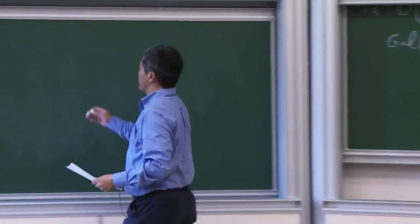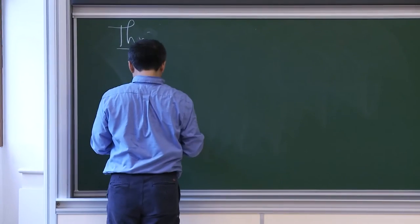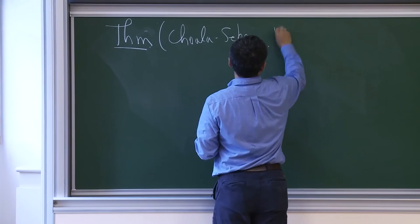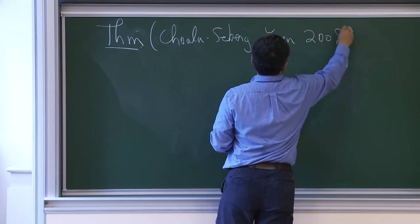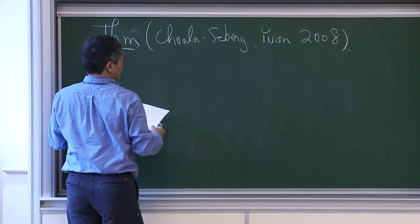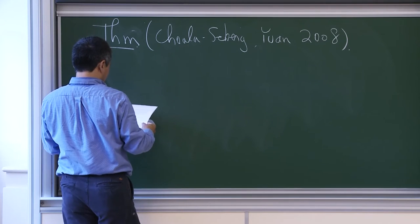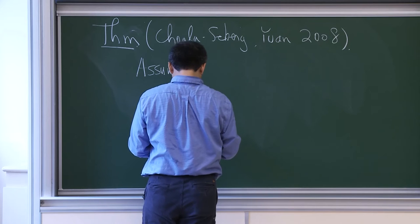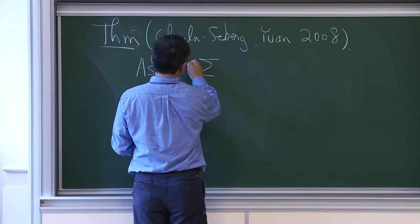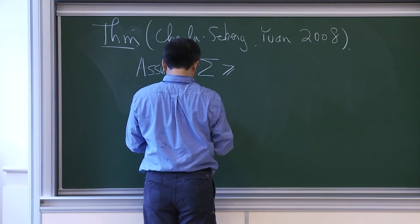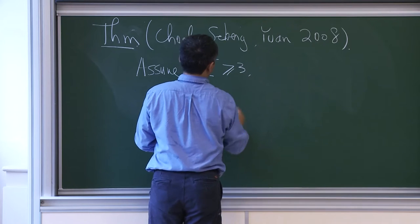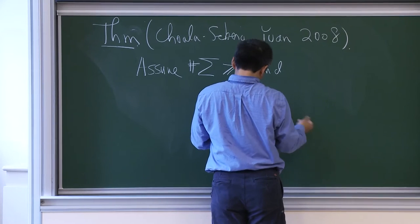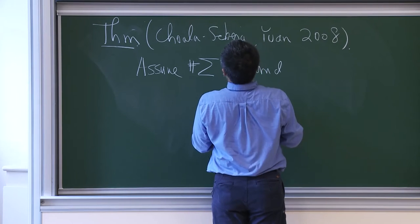The theorem — what I call the Chowla-Selberg formula — is Yuan 2008. It has some assumptions. The assumption: the cardinality of sigma is greater than 3, and there is no finite place of F that is ramified in both B and E.